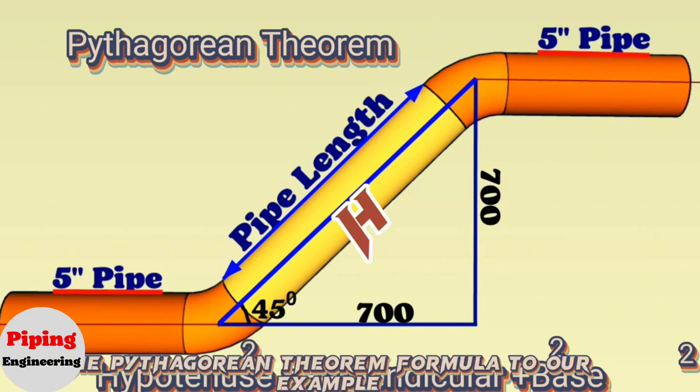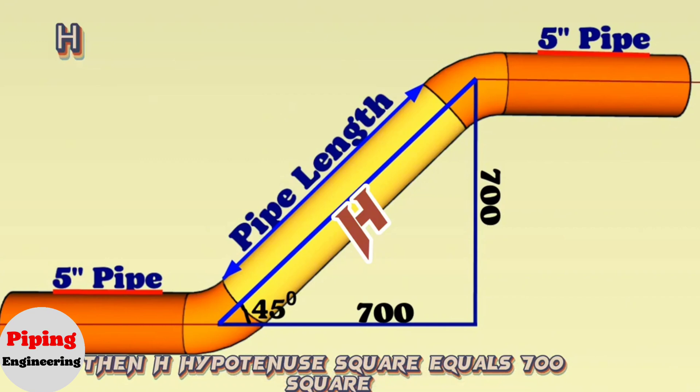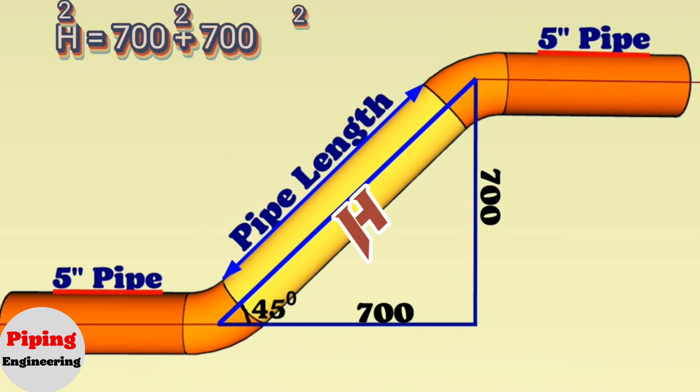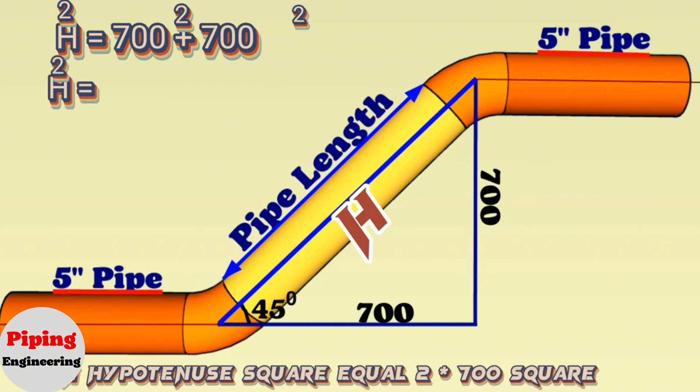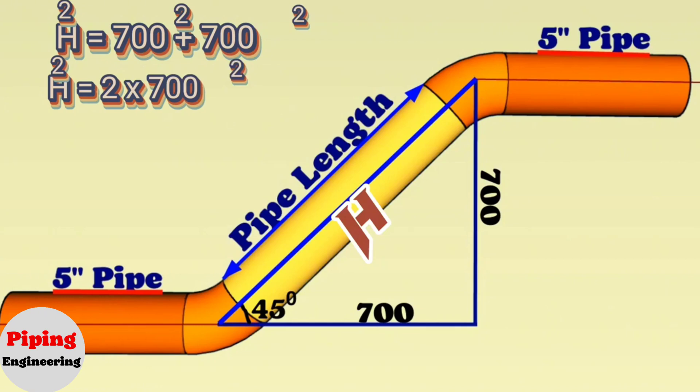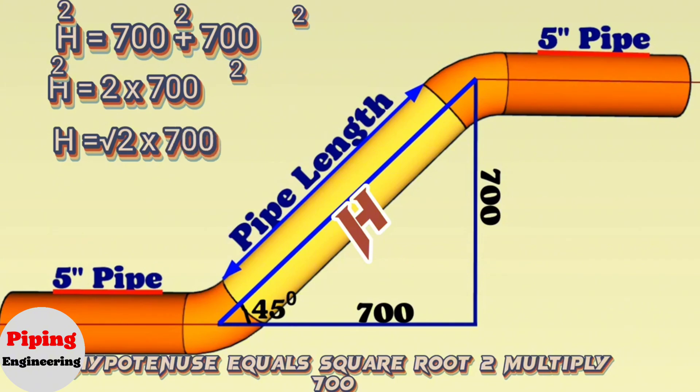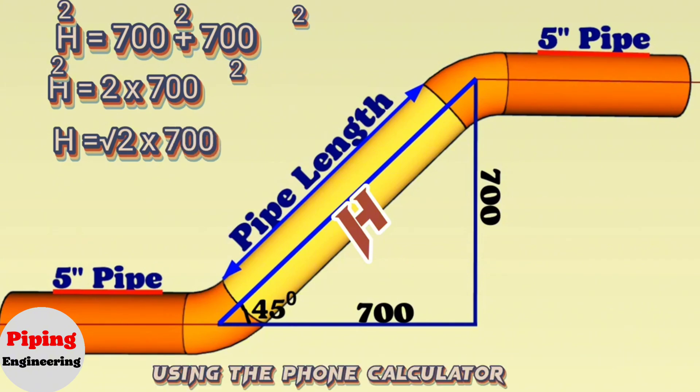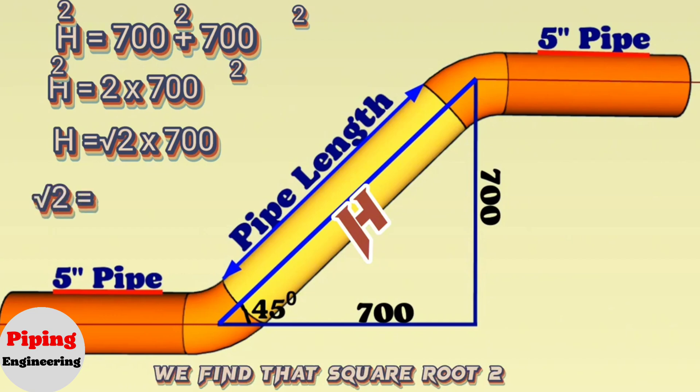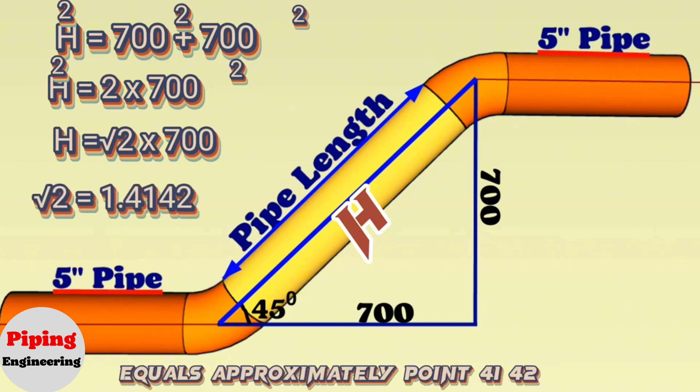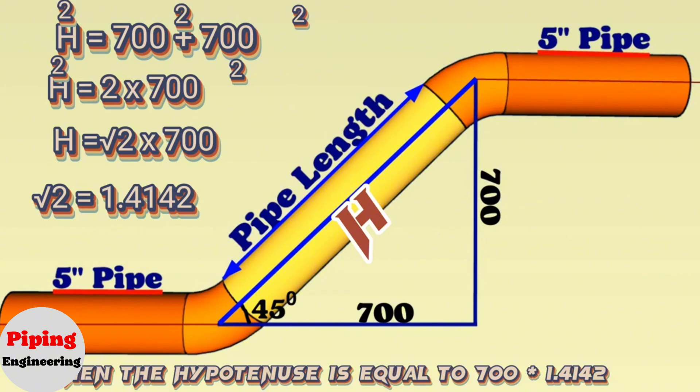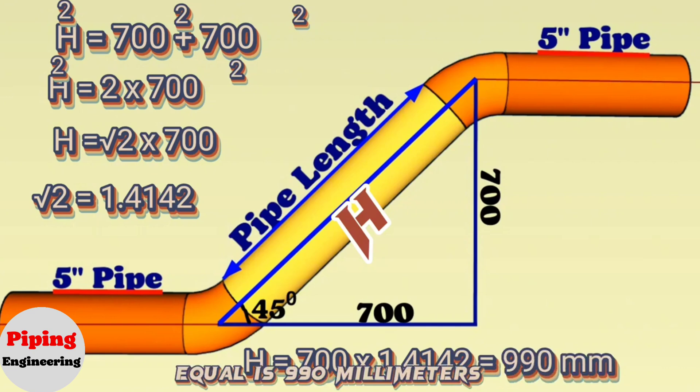If we apply the Pythagorean theorem formula to our example, then H hypotenuse square equals 700 square plus 700 square. We are continuing the calculation: H hypotenuse square equals 2 times 700 square. We are continuing again and find H hypotenuse equals square root 2 multiply 700. Using the phone calculator, we find that square root 2 equals approximately 1.4142. Then the hypotenuse is equal to 700 times 1.4142, which equals 990 millimeters.